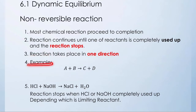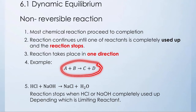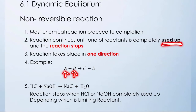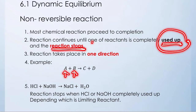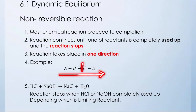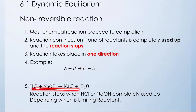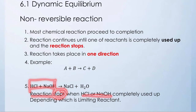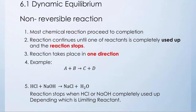One direction — it will only go to the right side. As an example, we have A plus B producing C plus D. A plus B are the reactants, and when these reactants are completely used up, the reaction will stop and produce C plus D. The reaction only occurs in one direction, from left to right. For example, the reaction between HCl and NaOH — the reaction will stop when HCl or NaOH is completely used up, depending on which one is the limiting reactant.